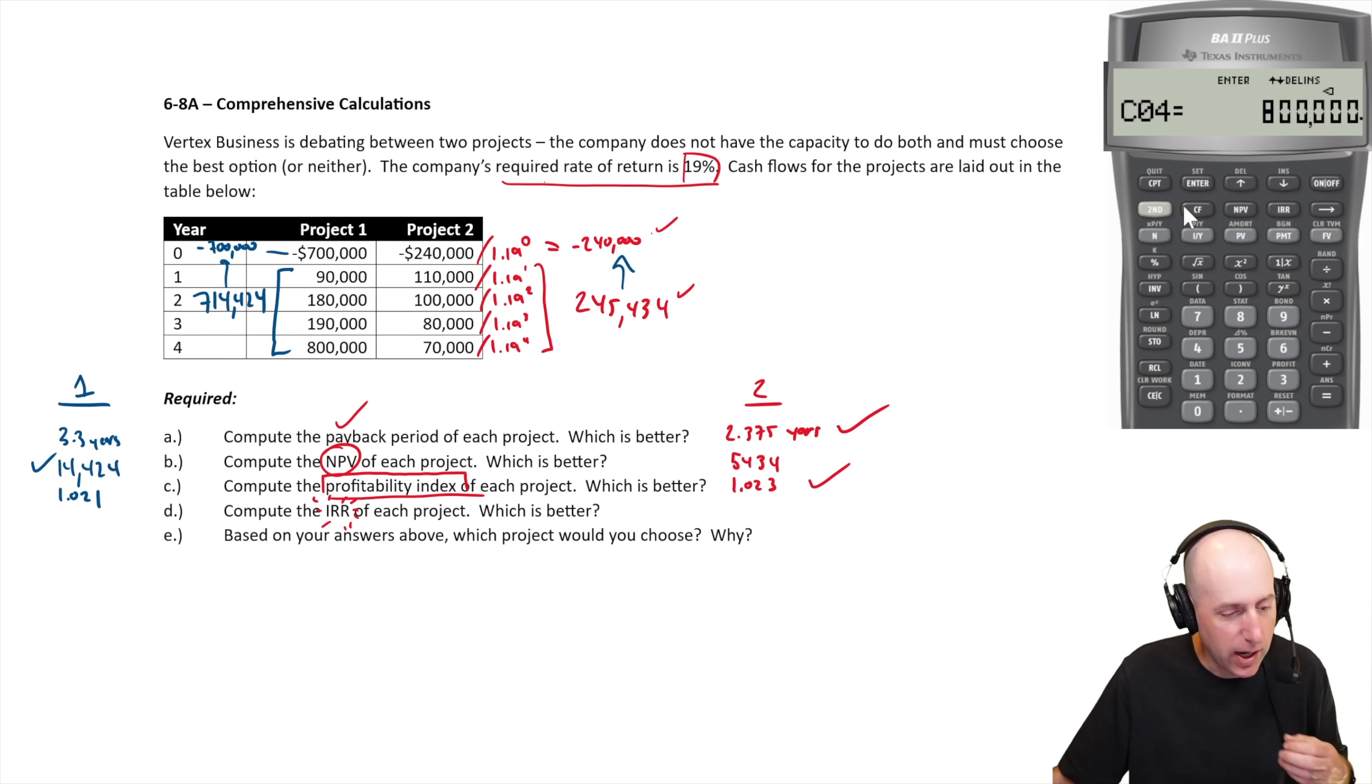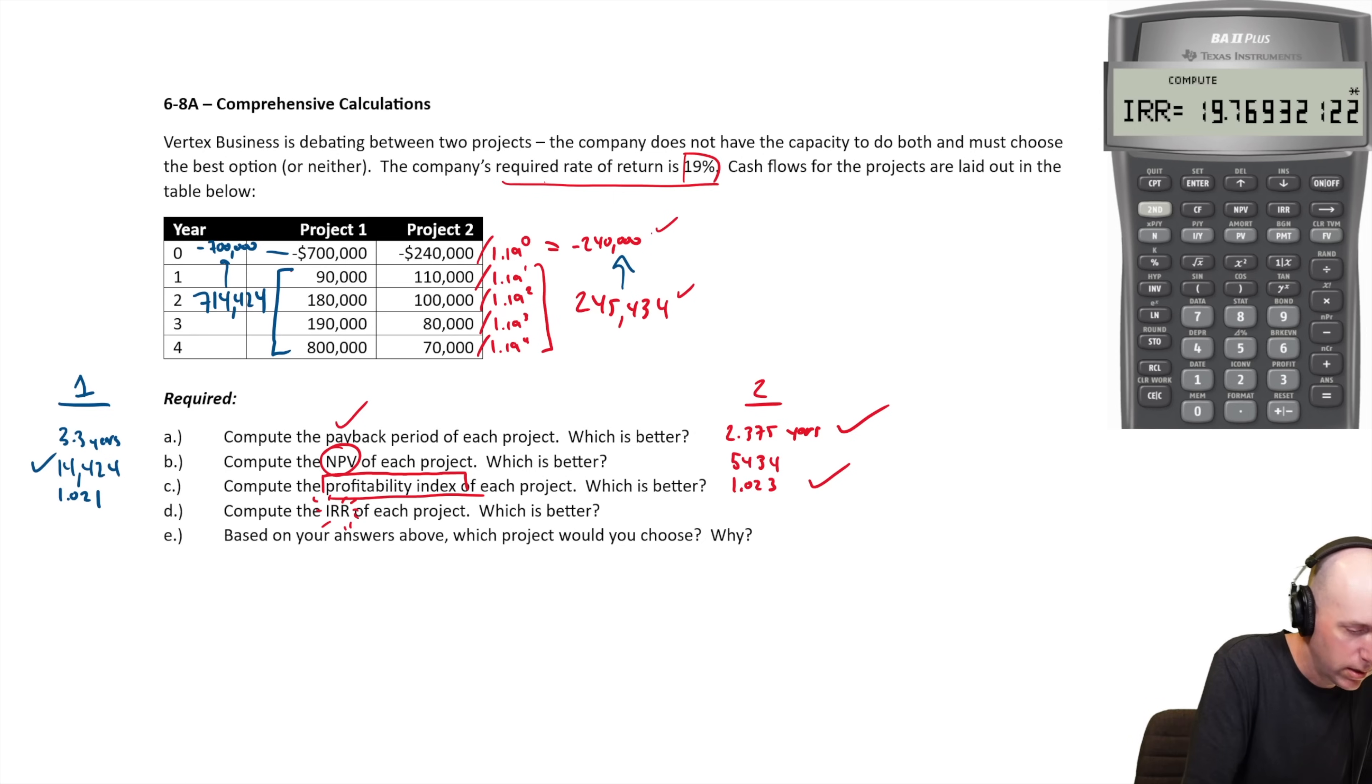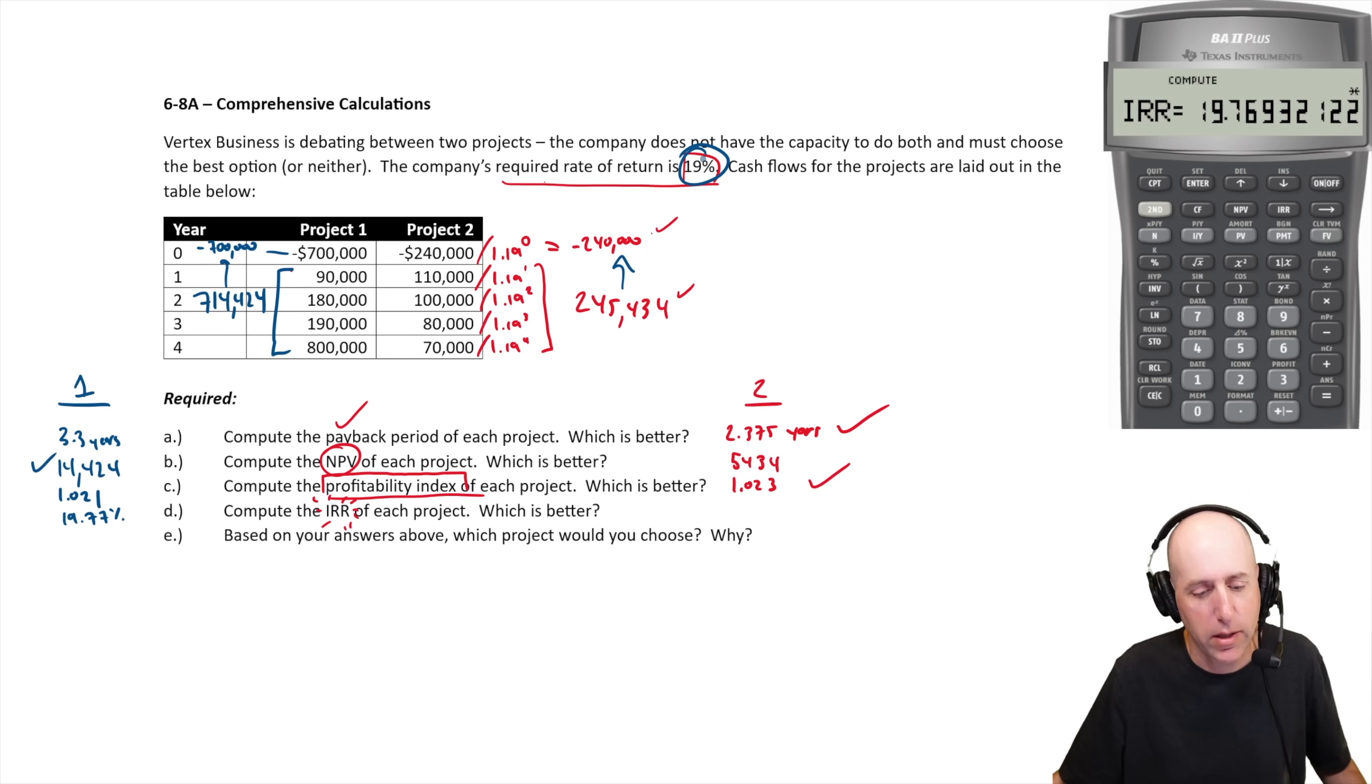And cash flow at time four, 800. And now I compute the IRR. So I hit IRR compute, I get 19.77%, 19.77%. And that's my answer to D. And by the way, the fact that the required rate of return is 19, this is 19.77, we'd say, this is a project you can go ahead with. And that should be clear because it had a positive net present value.